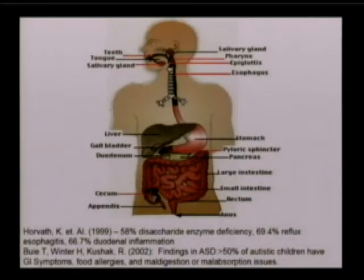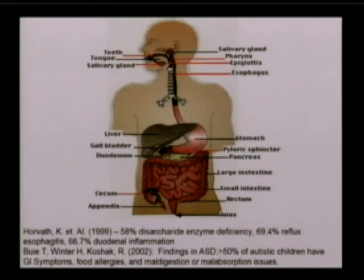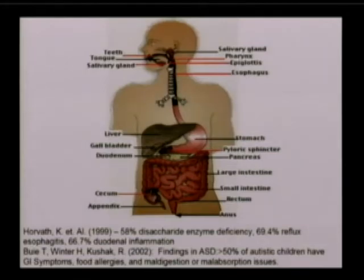In order for absorption to take place, food must be broken down into its tiniest components. Fats will be broken down to fatty acids, proteins eventually to amino acids. The specific carbohydrate diet focuses on carbohydrates because when there's damage to the mucosal layer and injury to the villi, enzymes on the surface of the small intestine are destroyed, preventing the complete digestion of most carbohydrates.